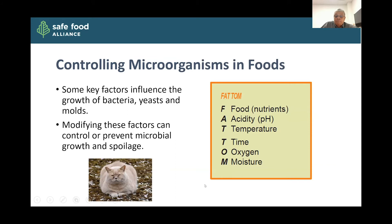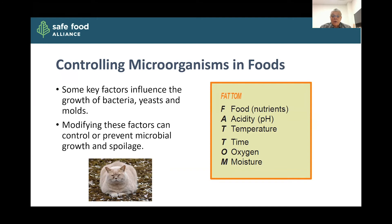How do we control microorganisms in food? There are a lot of key variables we can use to influence the growth of bacteria, yeasts, and molds. If we modify those factors, that can help us control or prevent microbial growth and spoilage. A useful acronym is FAT TOM: F for food or nutrients, A for acidity or pH, T for temperature, T for time, O for oxygen, and M for moisture. Those six key variables can really help us control microbes in food.